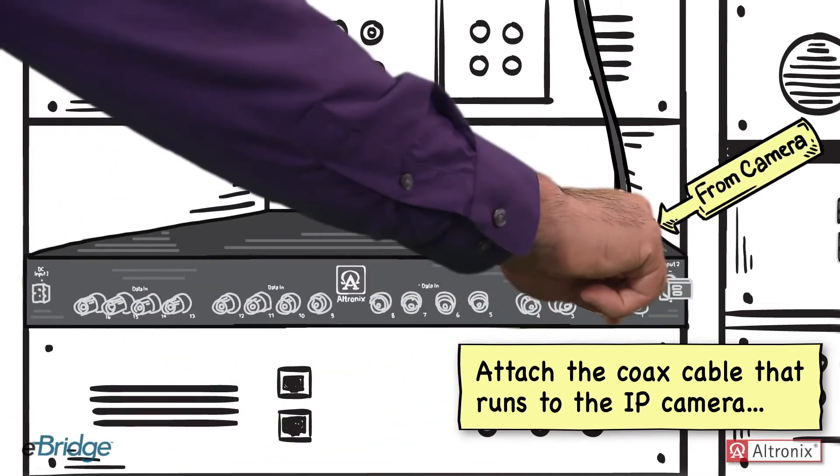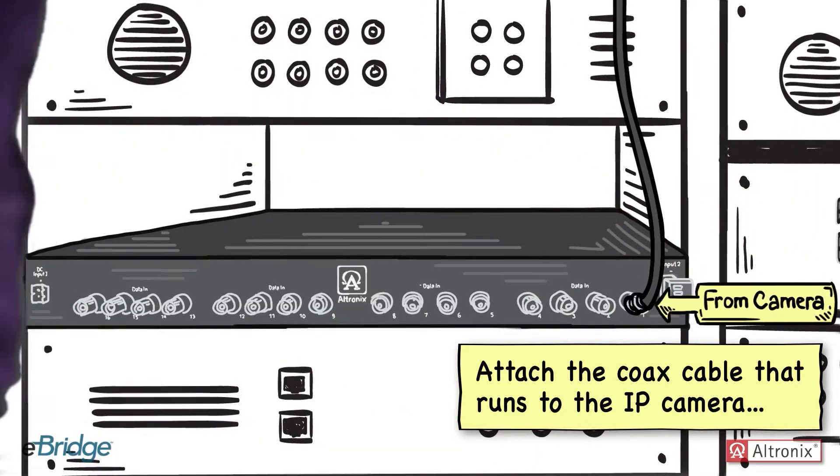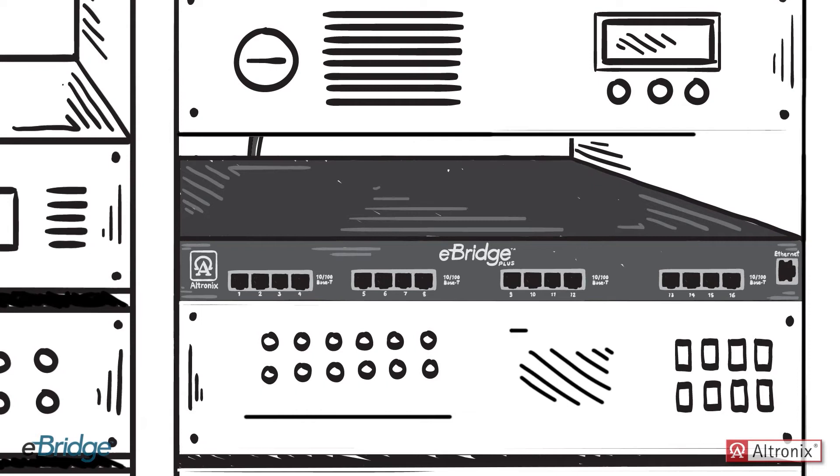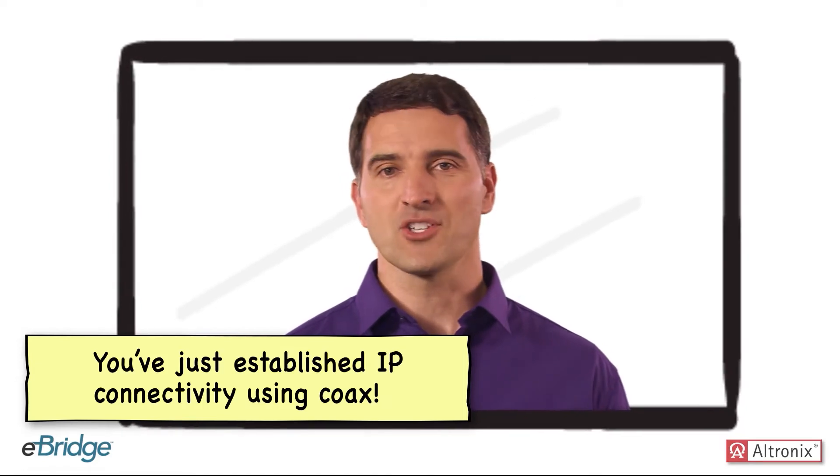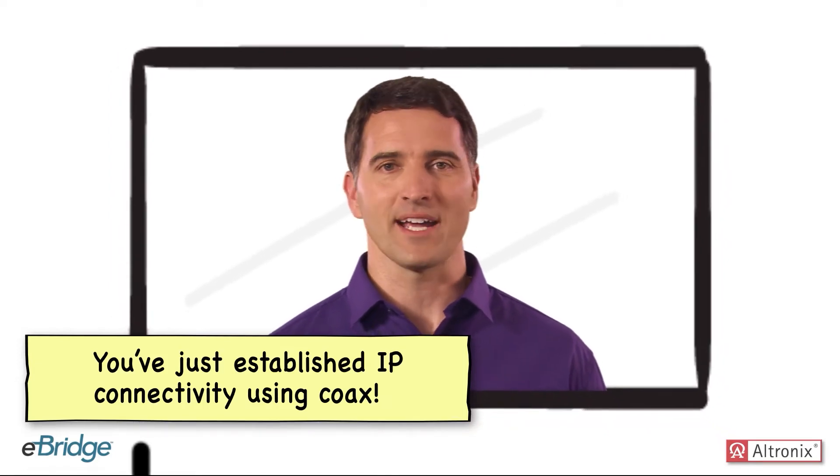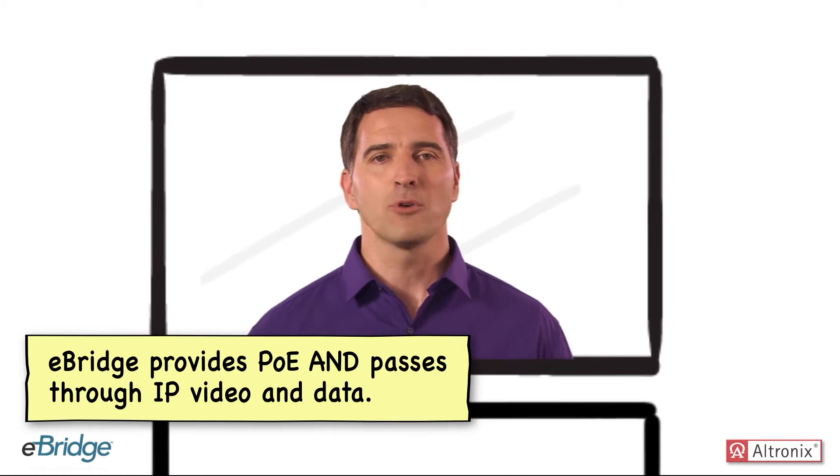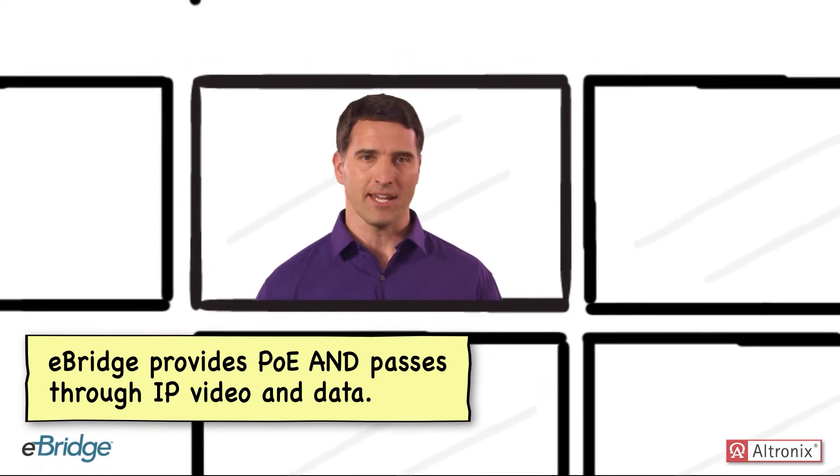Attach the coax cable that runs to the IP camera. Then plug in the Ethernet cable. And voila! You've just established IP connectivity using coax. eBridge provides power over Ethernet and passes through IP video and data.